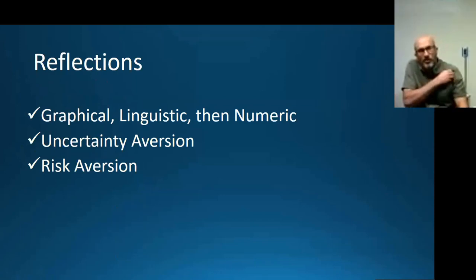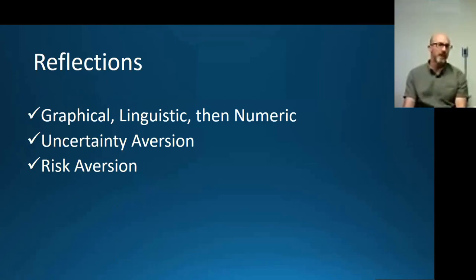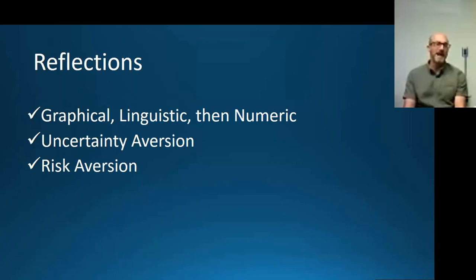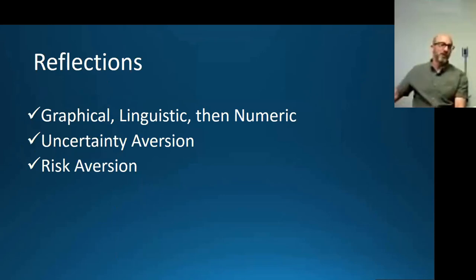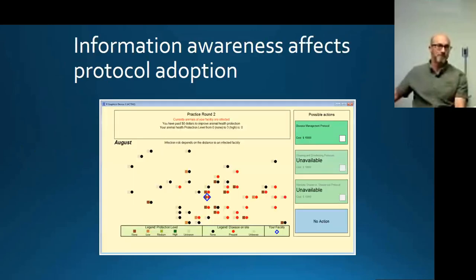In general, graphical messages work best, then words, then numeric. We also see that adding uncertainty causes people to behave with more risk aversion — they will be less risky. And when there's more risk, they behave better.